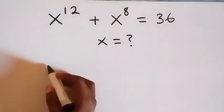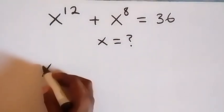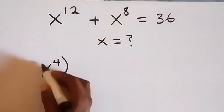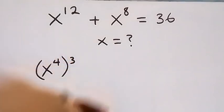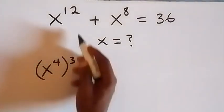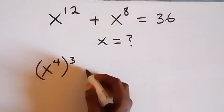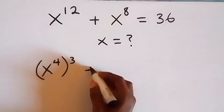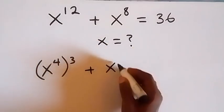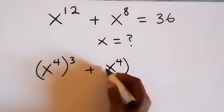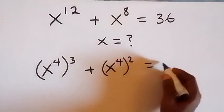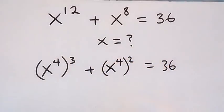From here, let's write this again as x raised to power 4, then raised to power 3. On the law of indices, this multiplies as x raised to power 12, then plus the same thing: x raised to power 4, then raised to power 2, and equals to 36.